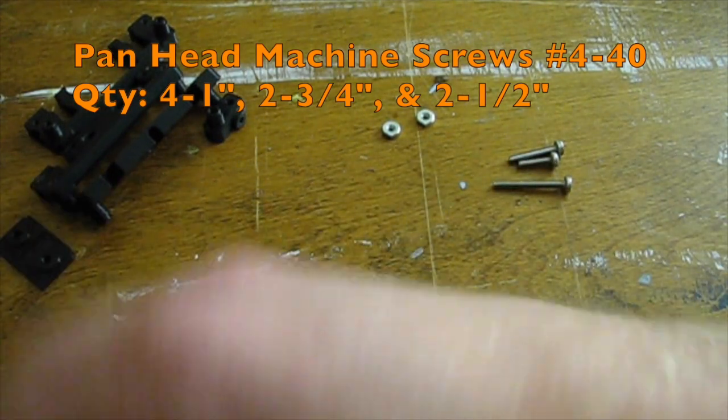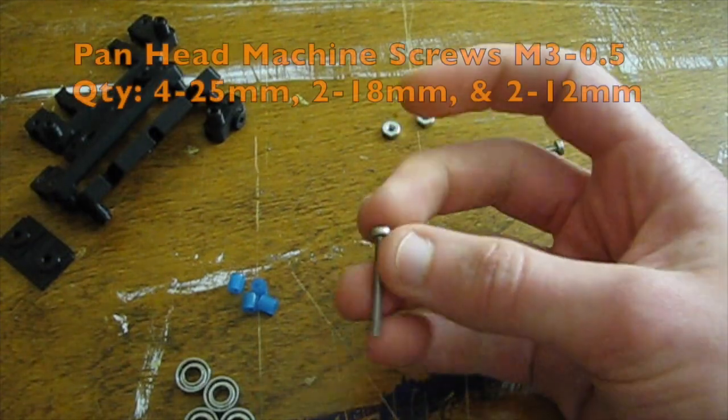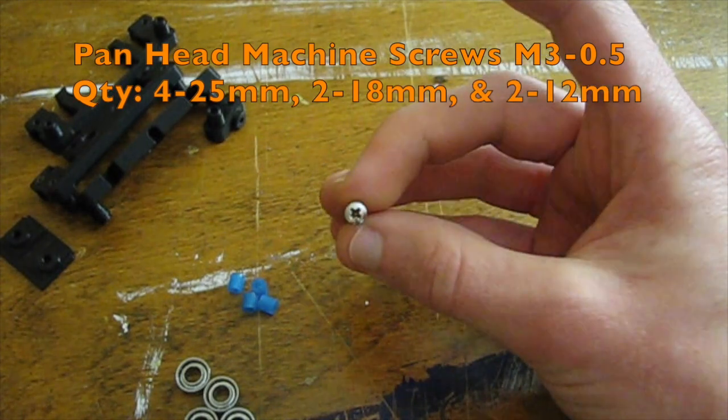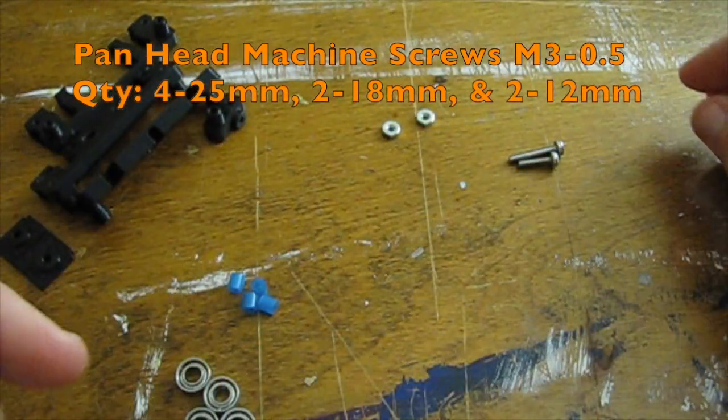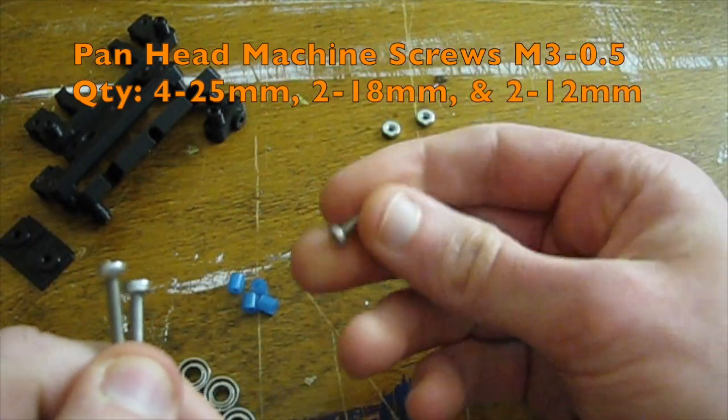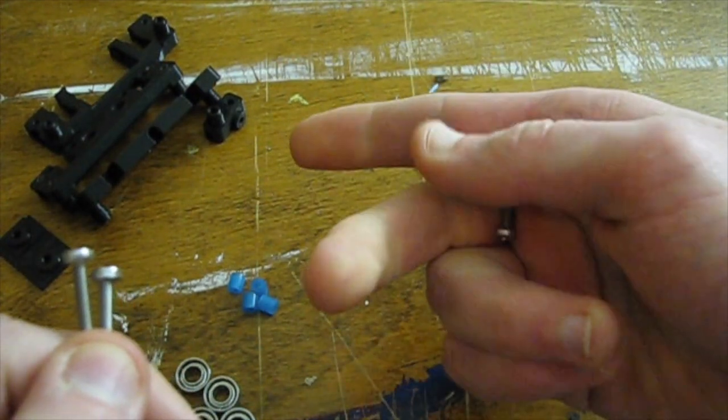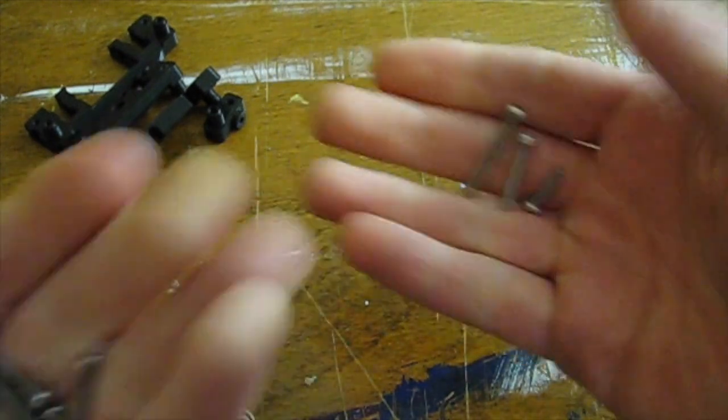If you're not in the US and metric is more available, as mentioned, you're going to get a 25 millimeter screw. Remember these are M3-0.5 threads. So 25 millimeter, 18 millimeter, and 12 millimeter. Those will replace your half-inch, three-quarter inch, and inch screws. So same count there.